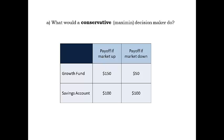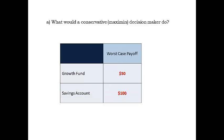A conservative decision maker looks at each decision alternative and focuses on the worst case outcome. For the growth fund, the worst outcome is $50. For the savings account, the worst outcome is $100. Comparing the worst case outcomes, the conservative decision maker chooses the best of them. For our example, the savings account is the choice with the best of the worst payoffs — known as maximin for profit examples.